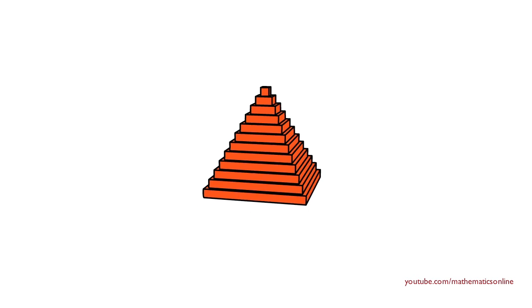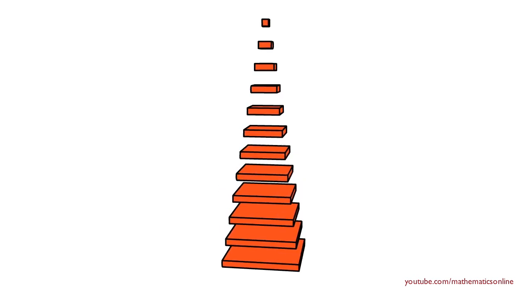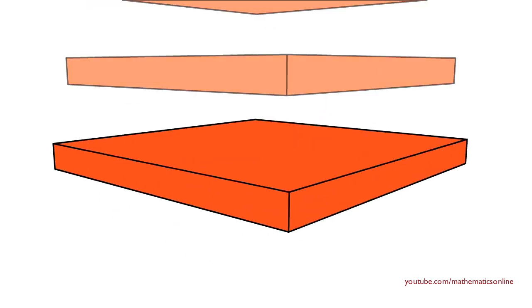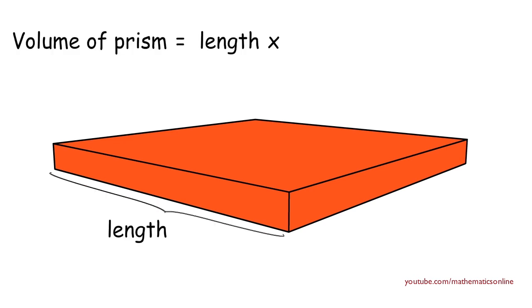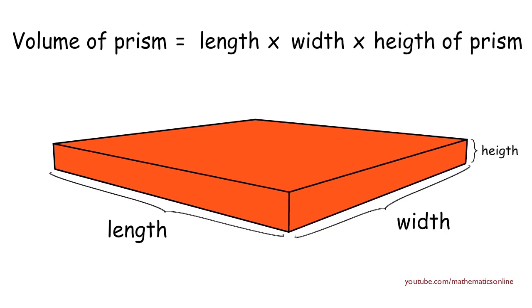The step pyramid is actually made up of rectangular prisms. Let's take a look at one of the prisms — its volume is equal to length times width times height. Since the base of each prism is a square, the length and width are the same. Therefore the volume is equal to length times length times height.